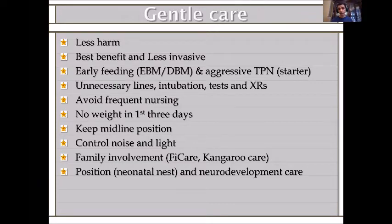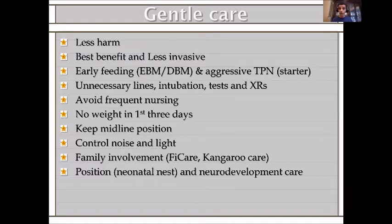As part of gentle care: avoid unnecessary lines, avoid unnecessary intubation, avoid unnecessary tests or x-rays, avoid frequent nursing. For example, in our facility we do no weighing in the first three days, we keep the baby in midline position, we control noise with a noise detector, we control light and cover the baby, we involve family — through NIDCAP care or kangaroo care — we protect position, do nesting, and provide neurodevelopmental care. Initial care involves support, transport, arrival to an ICU, golden hour, and gentle care.